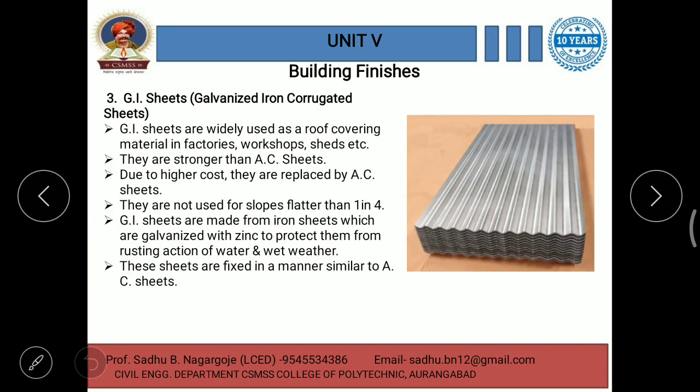Another type of sheet is GI sheets — galvanized iron corrugated sheets. GI sheets are widely used as roof covering material in factories, workshops, sheds, etc. Wherever larger spans are needed and sunlight is required inside the structure, these types of sheet coverings are used. They are stronger than AC sheets, but due to higher cost they are being replaced by AC sheets.